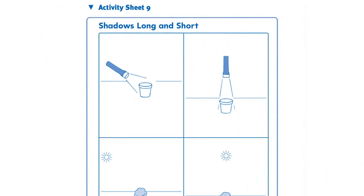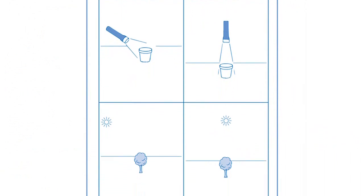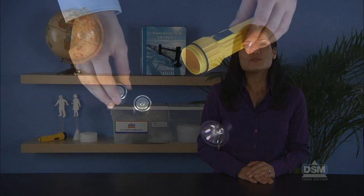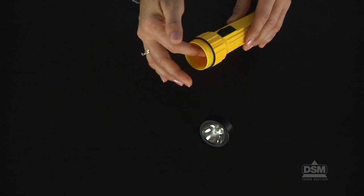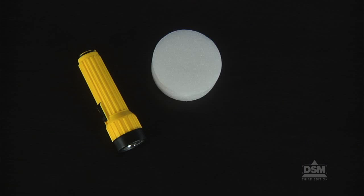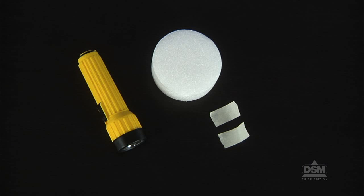To prepare for the activity, make a copy of Activity Sheet 9 for each student and arrange the room so that it can be darkened as much as possible. Place two C-cell batteries in each flashlight. Each team of two will need a flashlight with batteries, a foam disc, and two strips of masking tape.